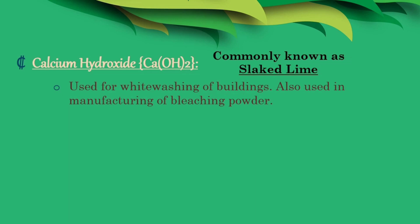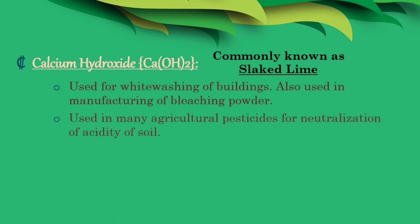Number three: calcium hydroxide. Calcium hydroxide is used for whitewashing of buildings. It is also used in manufacturing of bleaching powder, and it is used in many agricultural pesticides.